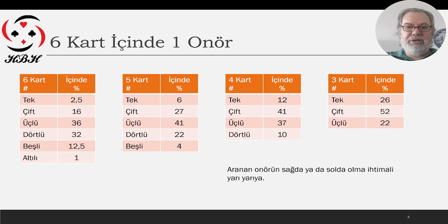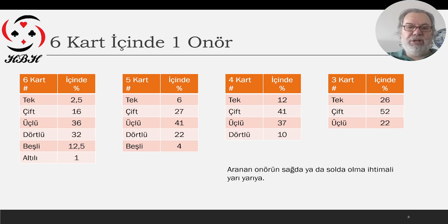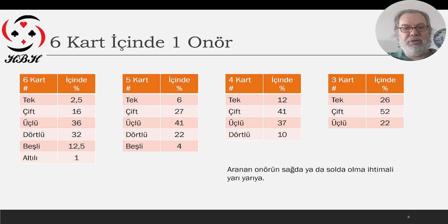Dört kart içindeki duruma bakalım. Tek parça yakalama şansımız arttı: iki buçuk, altı giderken on iki. Dışarıda dört kart var, dokuz kart bizde, yüzde on iki. İki parça olma ihtimali yüzde kırk bir, üç parça olma ihtimali yüzde otuz yedi. Dört parça olması — eksik onörü ararken — yüzde on.